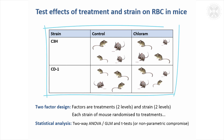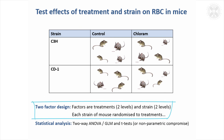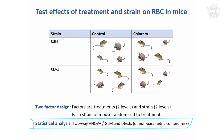Four mice for each of the four groups are randomly allocated. For statistical analysis there is conveniently a two-way ANOVA, or you can use a general linear model to analyse this data. The ANOVA can be used to test the interaction between the strain effect and the treatment effect as well. You might then want to do pairwise comparisons within the strains using t-tests or their non-parametric equivalents.